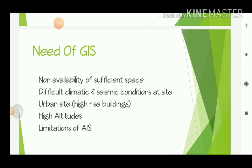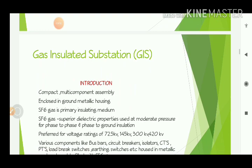All the limitations of AIS should be overcome in GIS — that is why we need the gas insulated substation. GIS is needed when there is non-availability of sufficient space, difficult climatic and seismic conditions at the site, urban sites with big cities and buildings where AIS is not applicable, and high altitudes. All limitations of AIS are overcome by GIS.